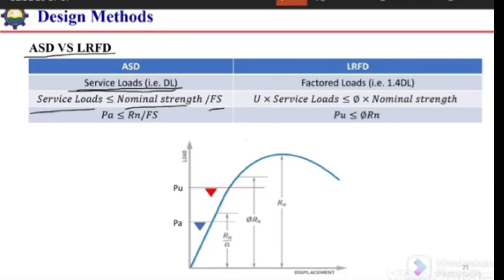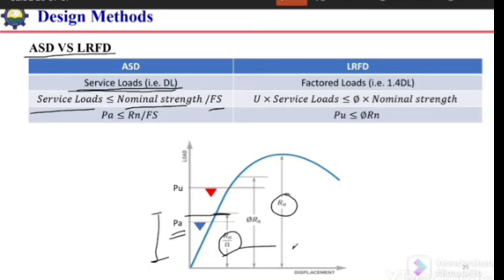As shown in this figure, we take the nominal strength of the member as a section, apply a factor of safety to reduce this strength, and bring the strength into the elastic range. We then compare it with the service loads — the service load should be less than the allowable capacity. This reduced stress is termed the allowable stress in ASD.